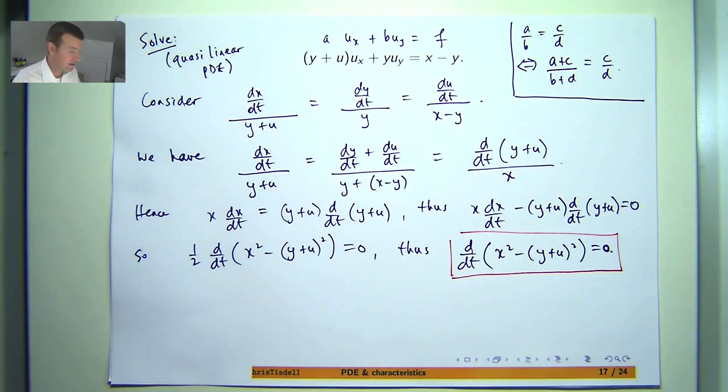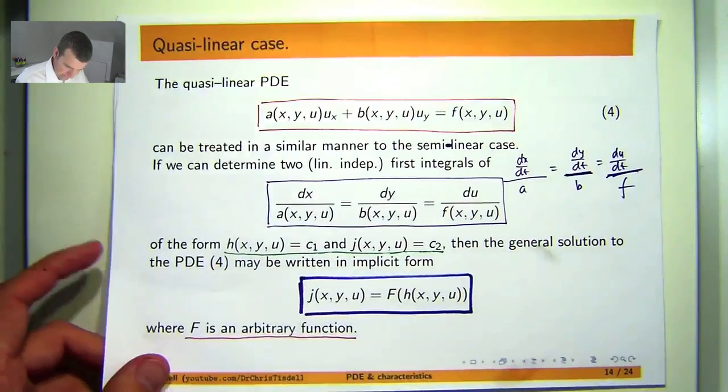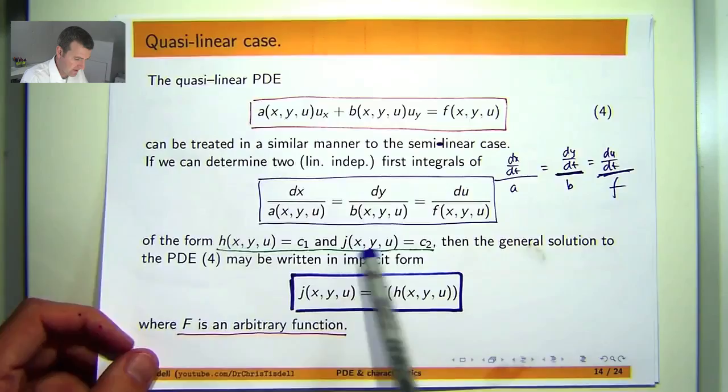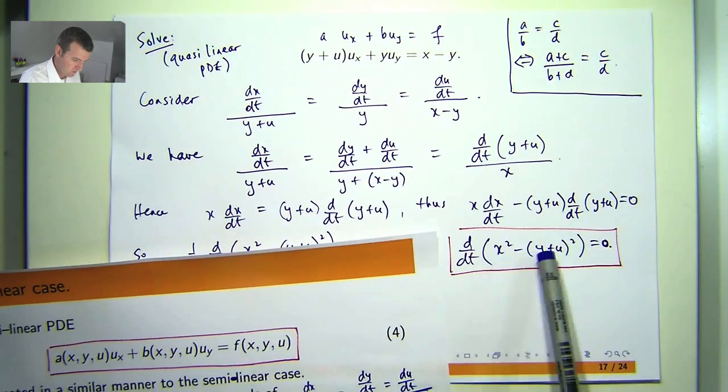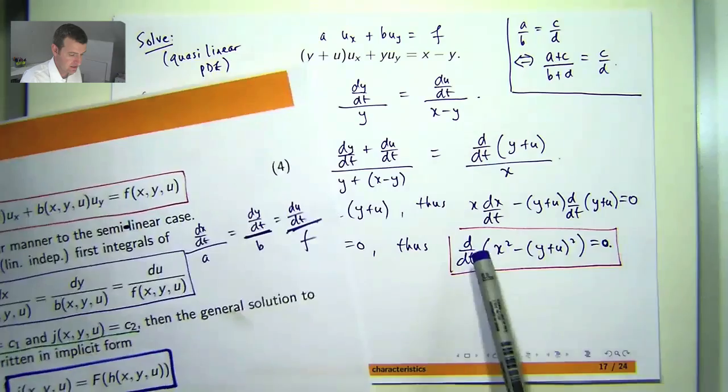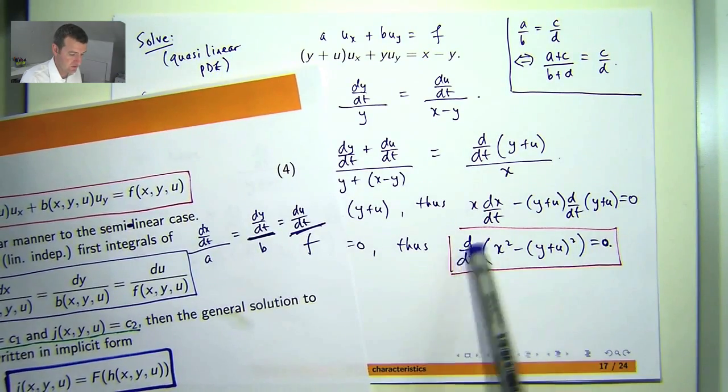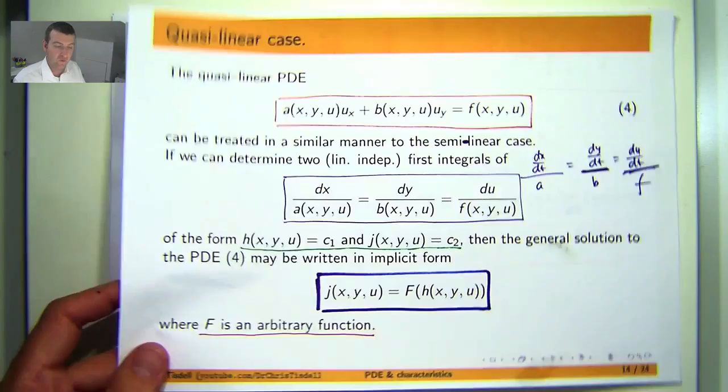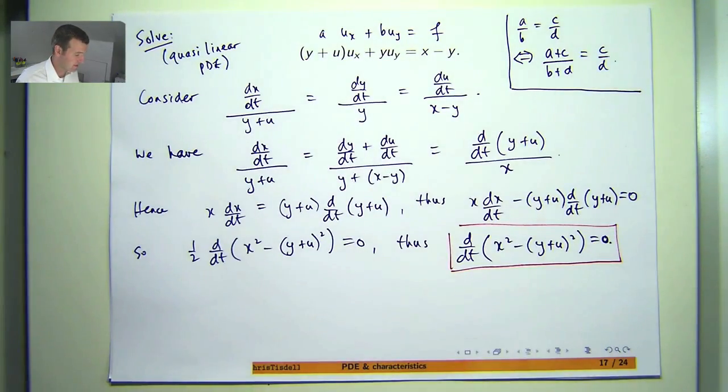So, this is an important step now in the solution. Because essentially, I've come up with a function that depends on x, y and u whose derivative is zero. That means, essentially if I do an integration, I'll get a constant over here and this will disappear. So, I've got one solution so far. I need to find another independent solution.